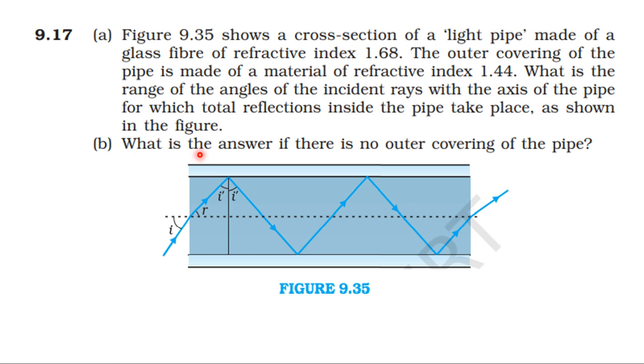From the NCERT textbook, from the topic Ray Optics and Optical Instruments, we will learn sum 9.17. This will be the first division — solved for the first time.